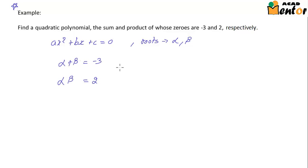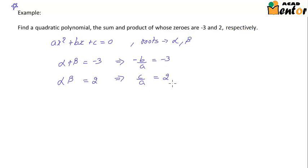From the relationship we studied, the sum of roots alpha + beta equals minus b by a. So minus b by a = -3. The product is given by c by a, so c by a = 2. If we can find values of a, b, and c, we can form a quadratic equation whose sum and product of zeros are -3 and 2. Let's assume a value for a — let's suppose a = 1.